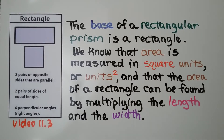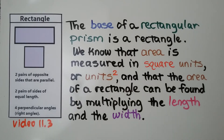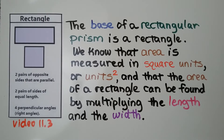Back in video 11.3, we learned about quadrilaterals. Rectangles are quadrilaterals, and so are squares. Squares are considered rectangles because they fit the requirements for a rectangle, and the base of a rectangular prism is a rectangle. We know that area is measured in square units, or units squared with a little 2 exponent, and the area of a rectangle can be found by multiplying the length and the width.